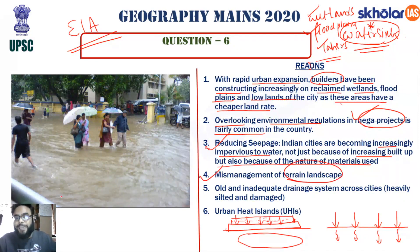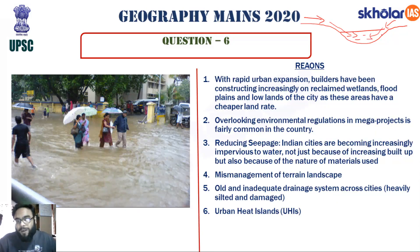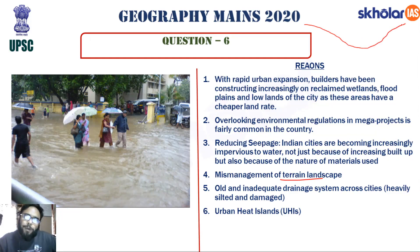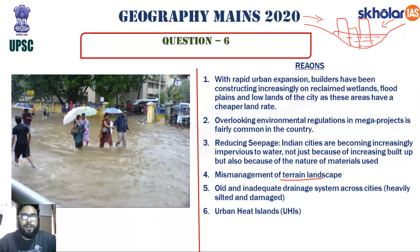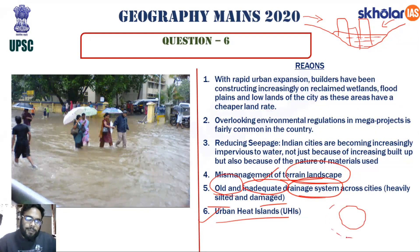Fourth reason: mismanagement of terrain landscape — low-lying areas that naturally act as water sinks are given to builders for construction, so surface runoff that would collect there now floods the built-up area. Fifth: India's urban drainage systems are old, traditional, highly silted, and damaged. Sixth: urban heat islands — the urban core is hotter than the periphery due to deforestation and concrete, creating low pressure that triggers convective heavy downpours within the city.